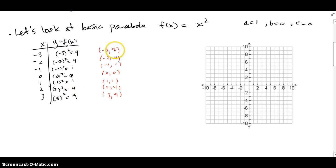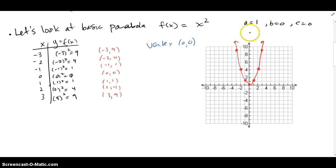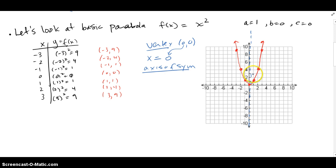The outputs happen to be all positive and they make ordered pairs that I'm going to plot. At x = −3 I'm up at 9, at x = −2 I'm up at 4, and so forth. Here's the parabola — it's opening up and it has a minimum at (0, 0). The vertex occurs at (0, 0), and the axis of symmetry is x = 0, always the x-coordinate of the vertex. This is the most basic parabola, and we can always graph parabolas by plotting points.